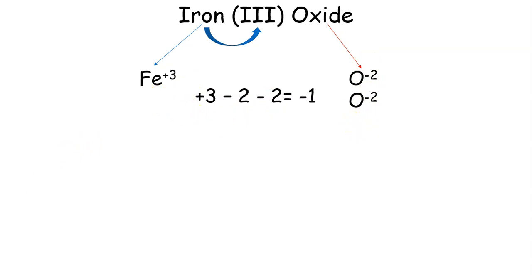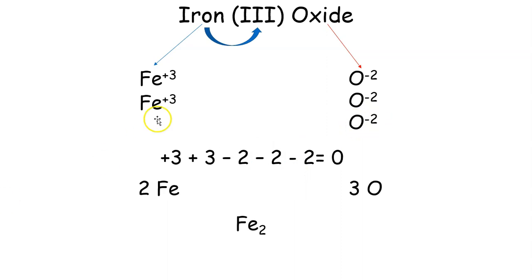Let's add another positive. So Fe +3. And we re-add this up. We get +3 + 3 - 2 - 2. So now we have a +2 charge. Remember, we're trying to get to 0. So I have a +2, so I'm going to add another oxygen -2 and another oxygen -2. And add this up. And I get +3 + 3 - 2 - 2 - 2, and that equals 0.